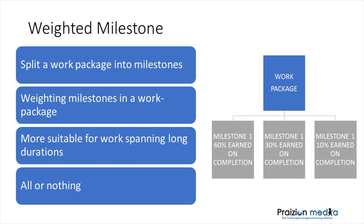The weighted milestone method is more suitable for long duration work packages — according to the PMI, those with longer than two time periods that have intermediate and tangible results or milestones. To be used effectively, the weighted milestone technique requires at least one interim milestone for each reporting period, and it doesn't permit partial credit for incomplete milestones — it's all or nothing. The PMI shows an example of this in Figure 7-3 of the practice guide for earned value.